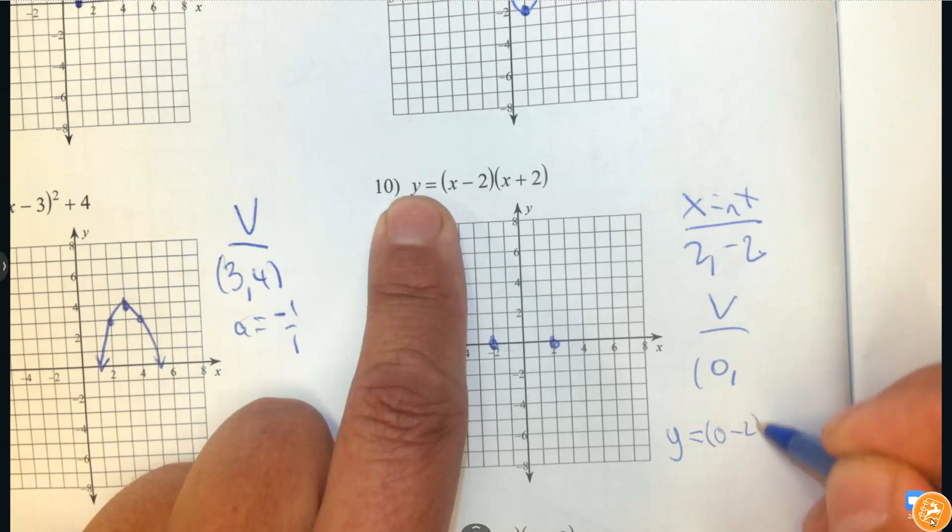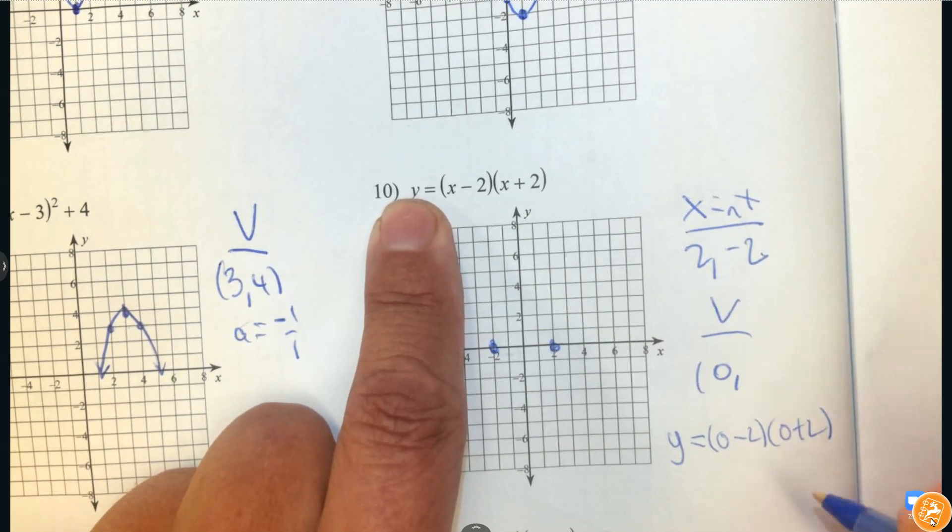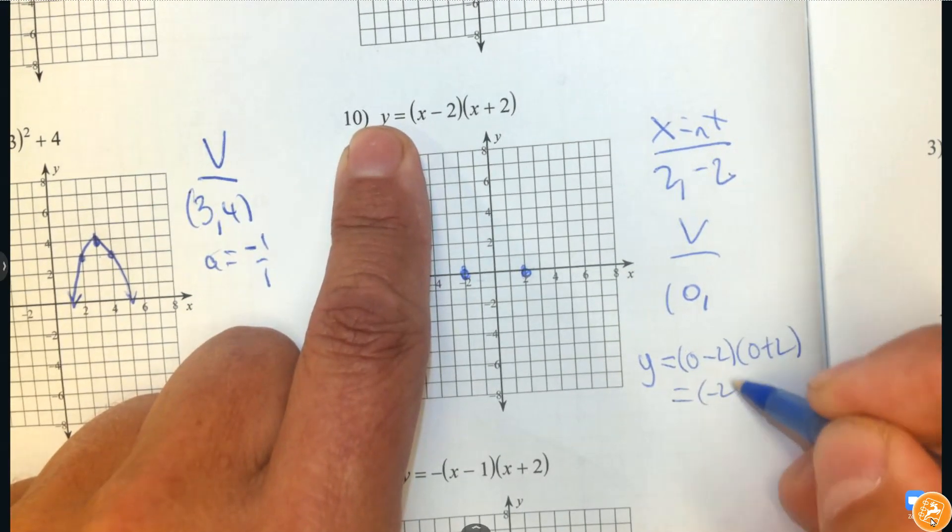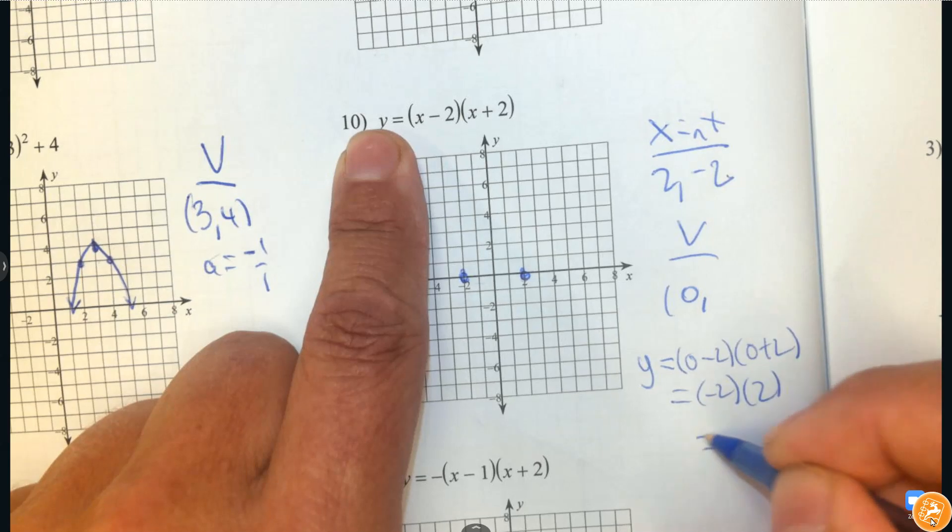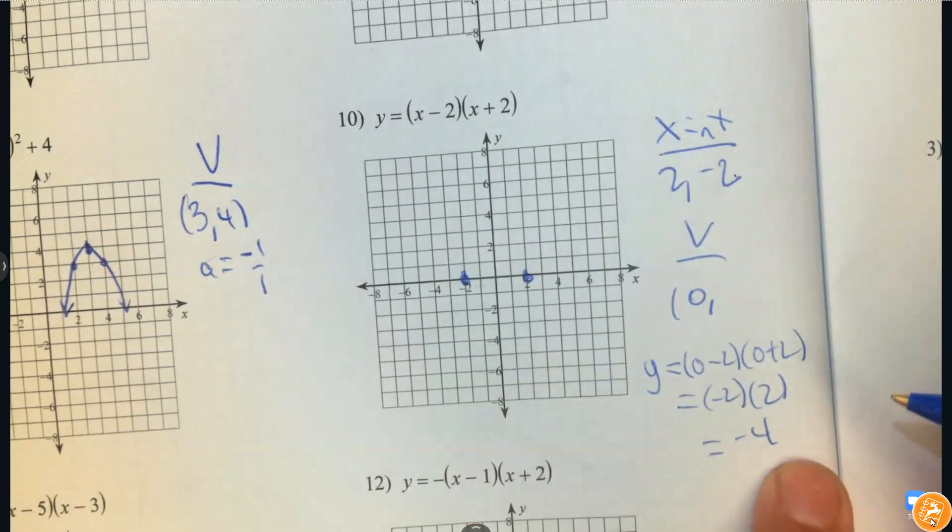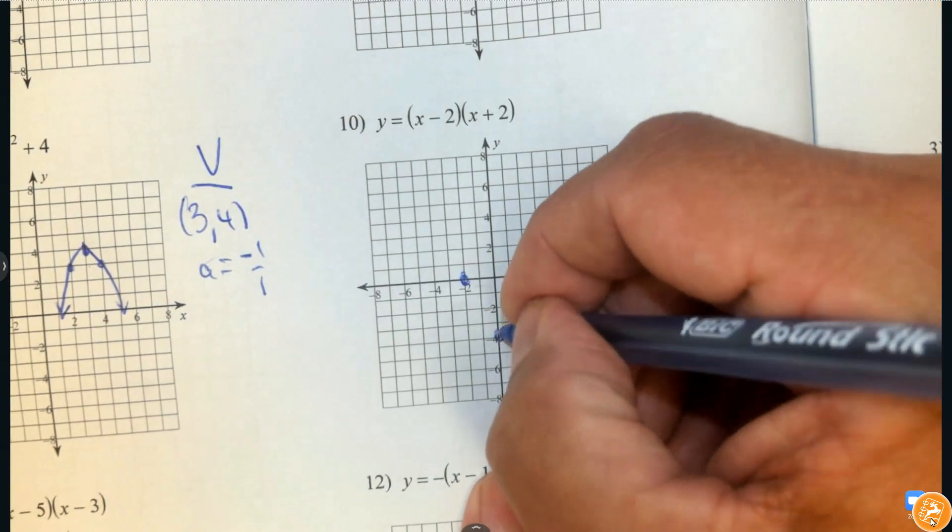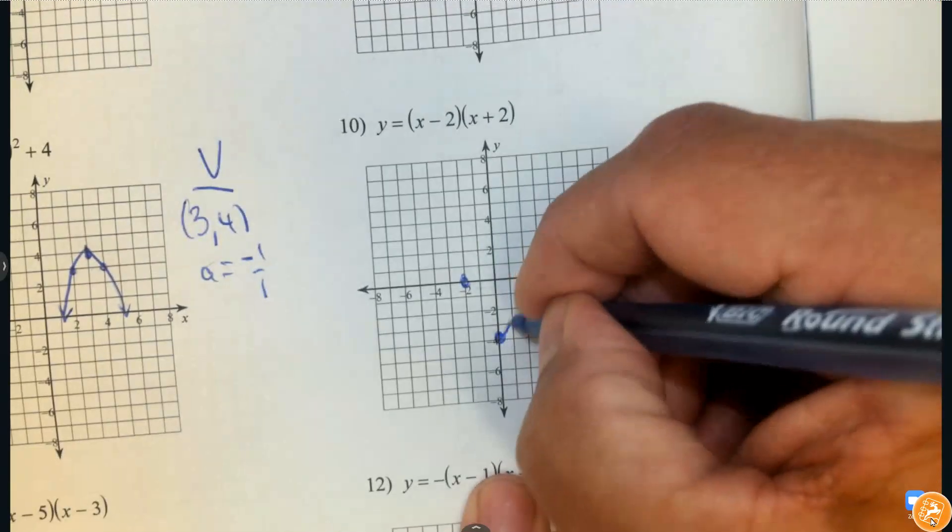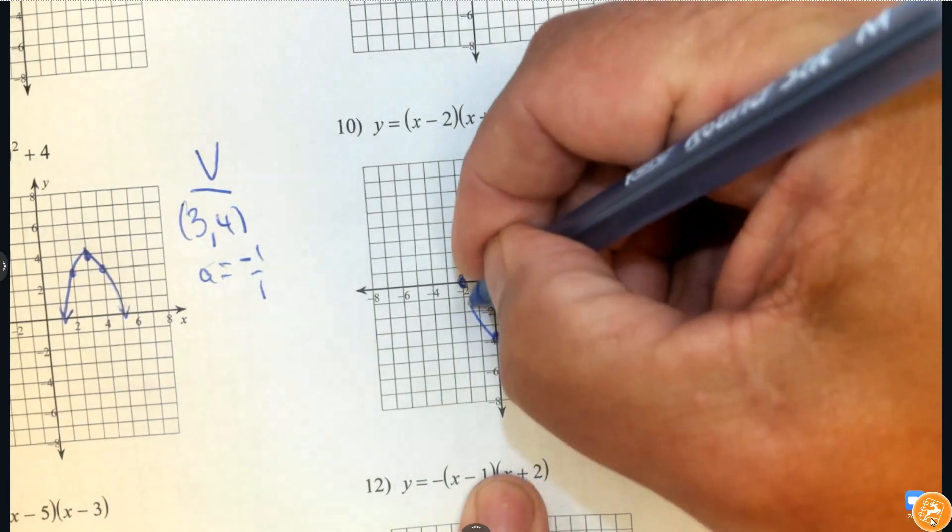So 0 subtract 2, 0 plus 2, and then solve it. So that's negative 2 and positive 2. Multiply it. That's going to be negative 4. So find where negative 4 is, and then draw your parabola with the points that we have.